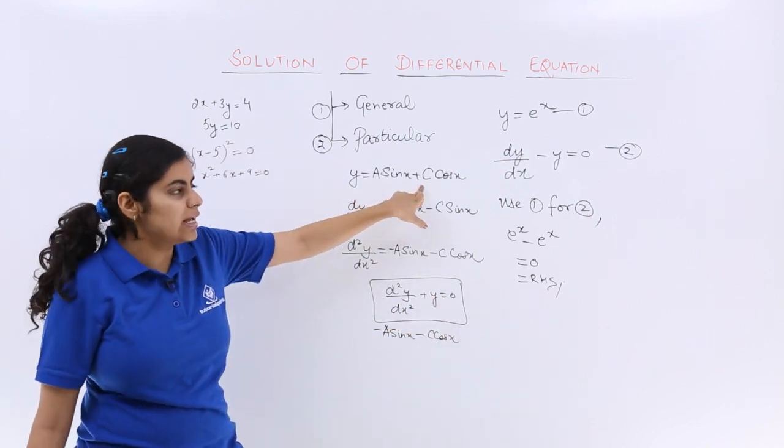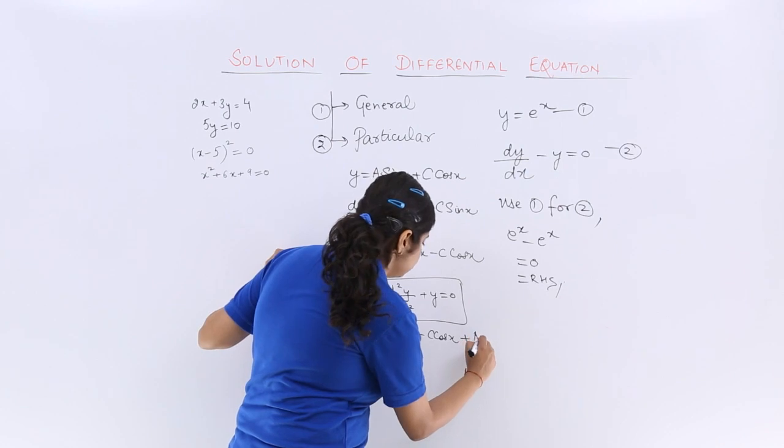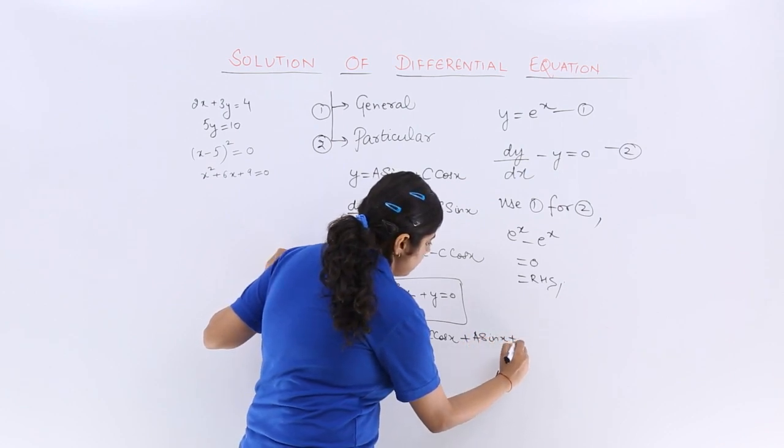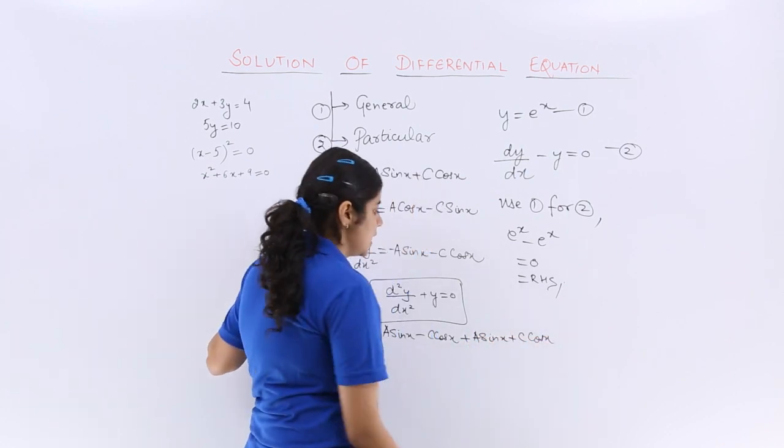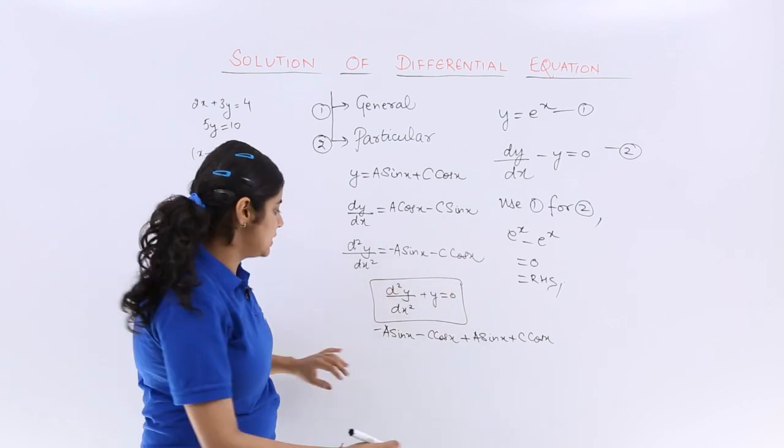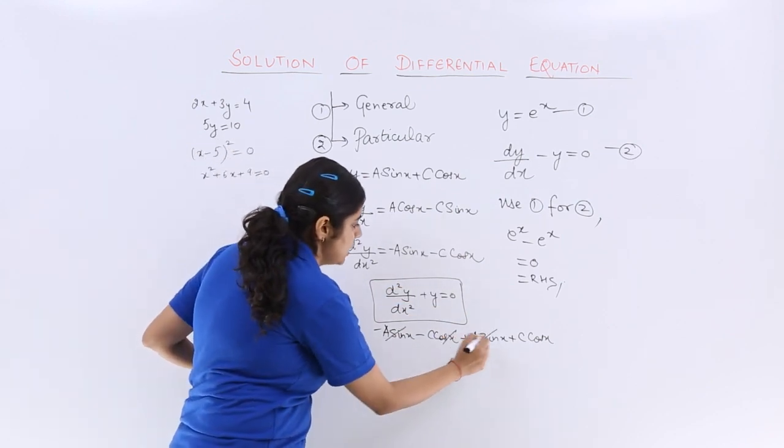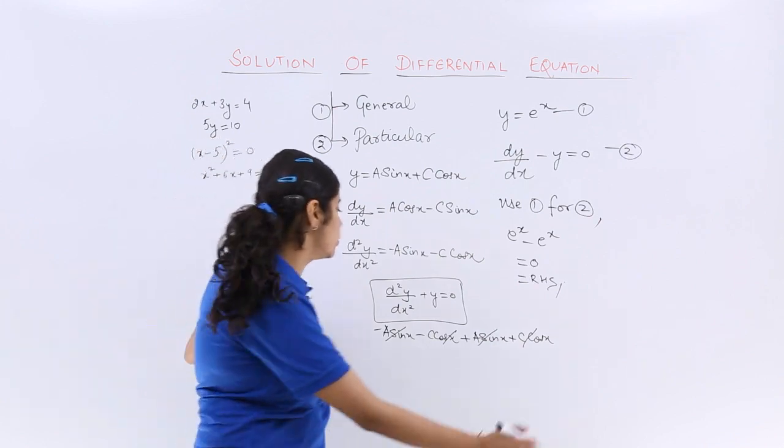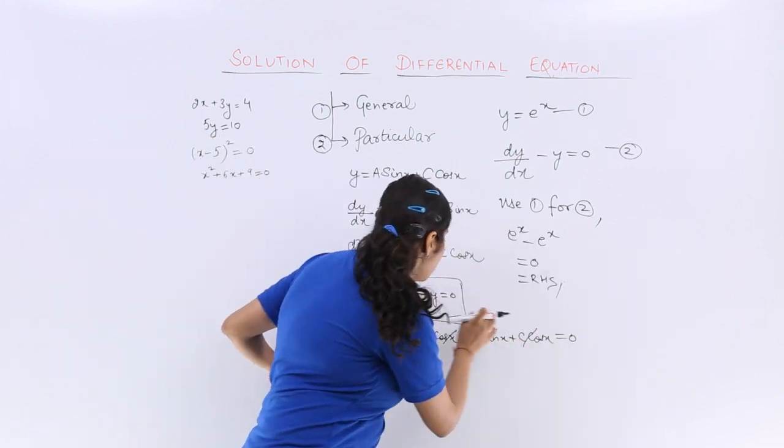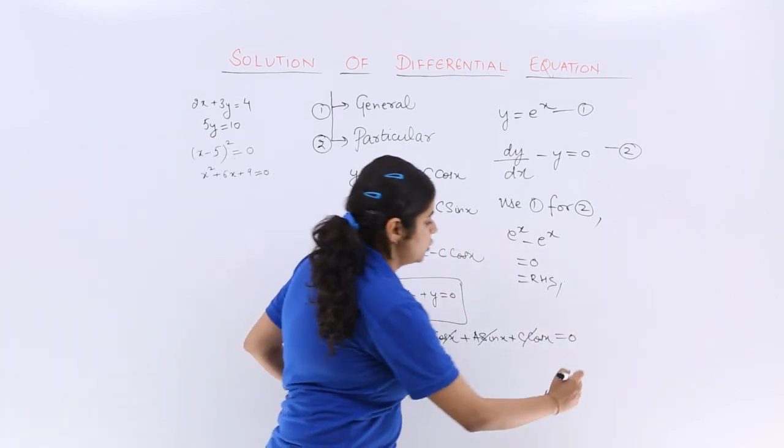Plus y is plus a sin x plus c cos x. Let's see if something cancels. These two things get cancelled because of the opposite sign and equal magnitude. So it becomes equal to 0, and 0 equals 0 which is the right hand side.